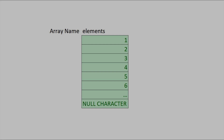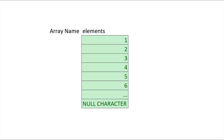First of all, let's have a look at what an array is. It can be seen as a collection of elements of the same data type. You can see it, in its simplest form, as a list.